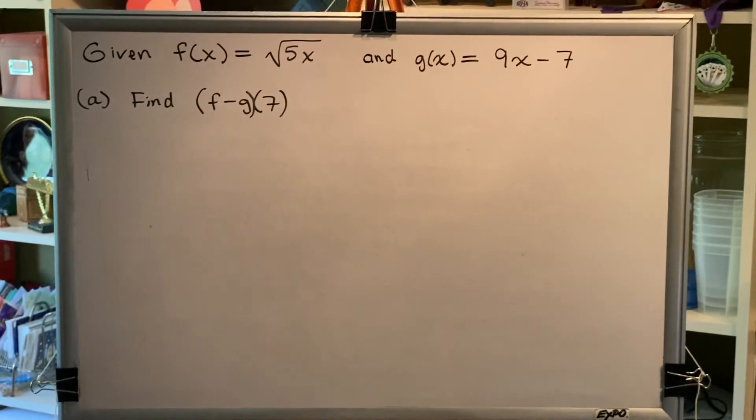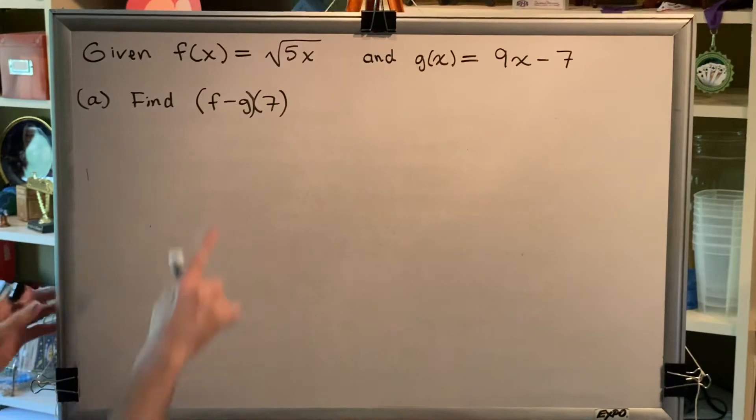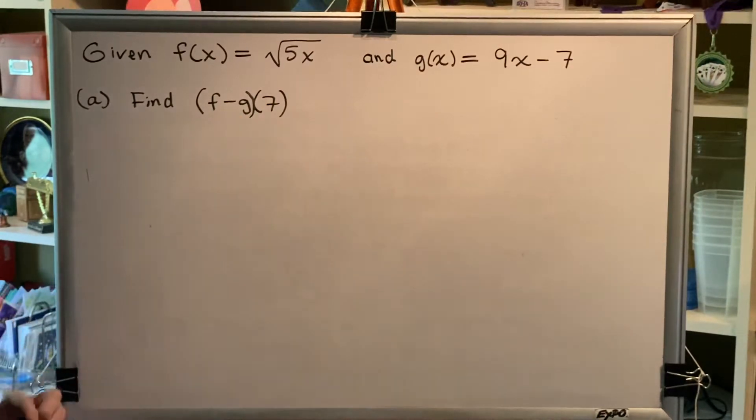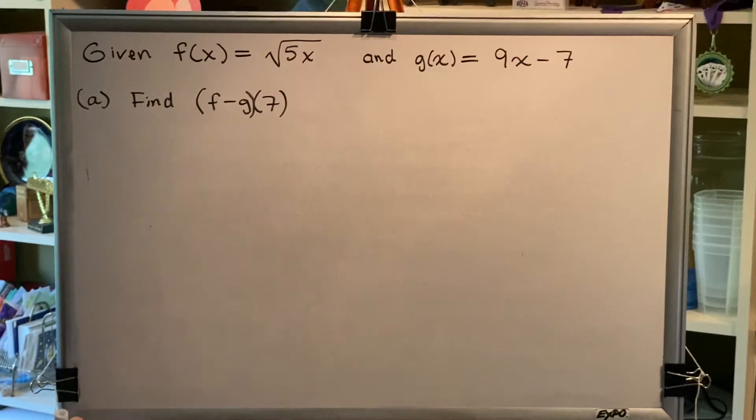Part A, find (f - g)(7). Okay, so what this means is that we've got two functions, f and g, and we want to subtract them. Both of them are being evaluated for the input 7.